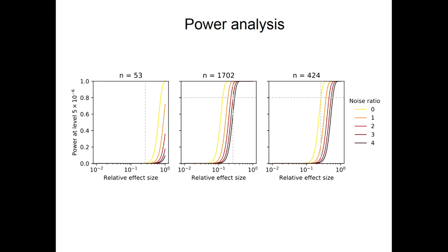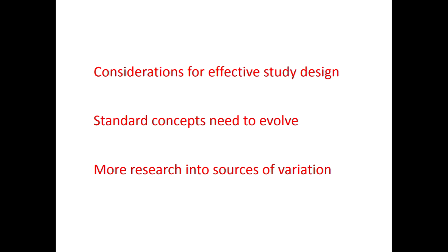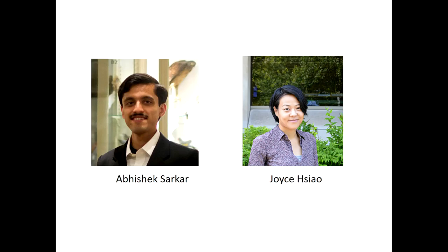The three messages from my work: consideration for effective study design is extremely important and not yet pervasive in the field. Standard concepts potentially should evolve — it doesn't always make sense to use discrete classification of cell phase or cell type; membership grade and continuous distributions should be considered. And more research into sources of variation will surely be needed, especially when the goal is to look at personalized medicine using these technologies and threshold effects. All of this work was done by Abhishek Sarkar and Joyce in my lab, who are in the job market now.